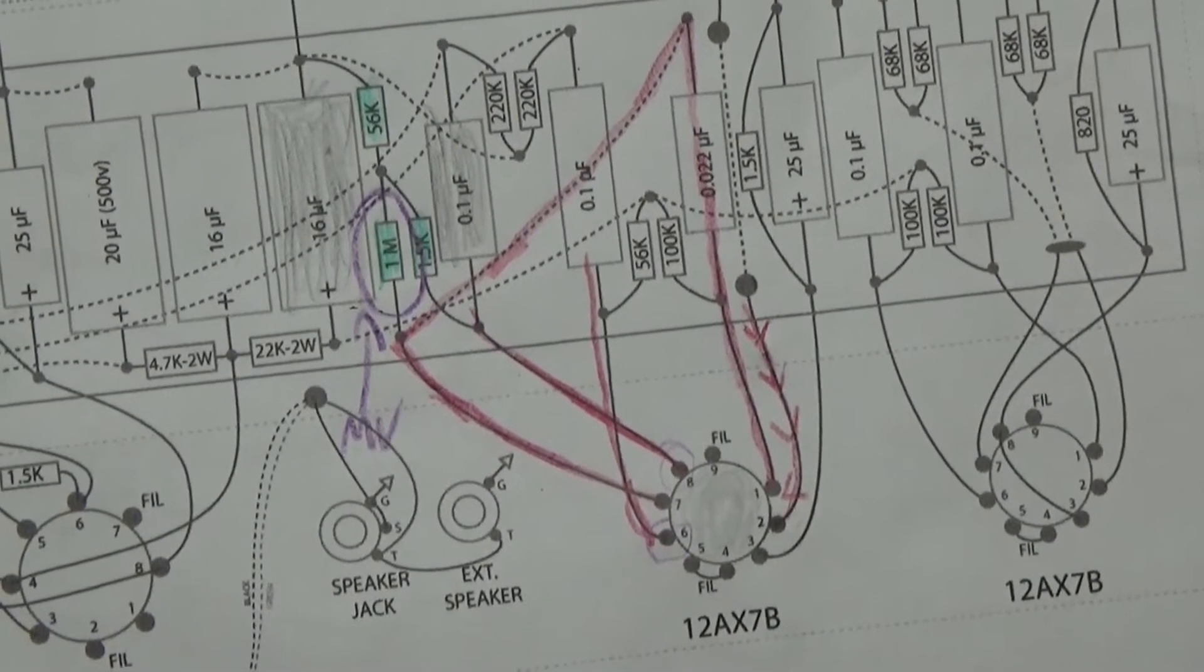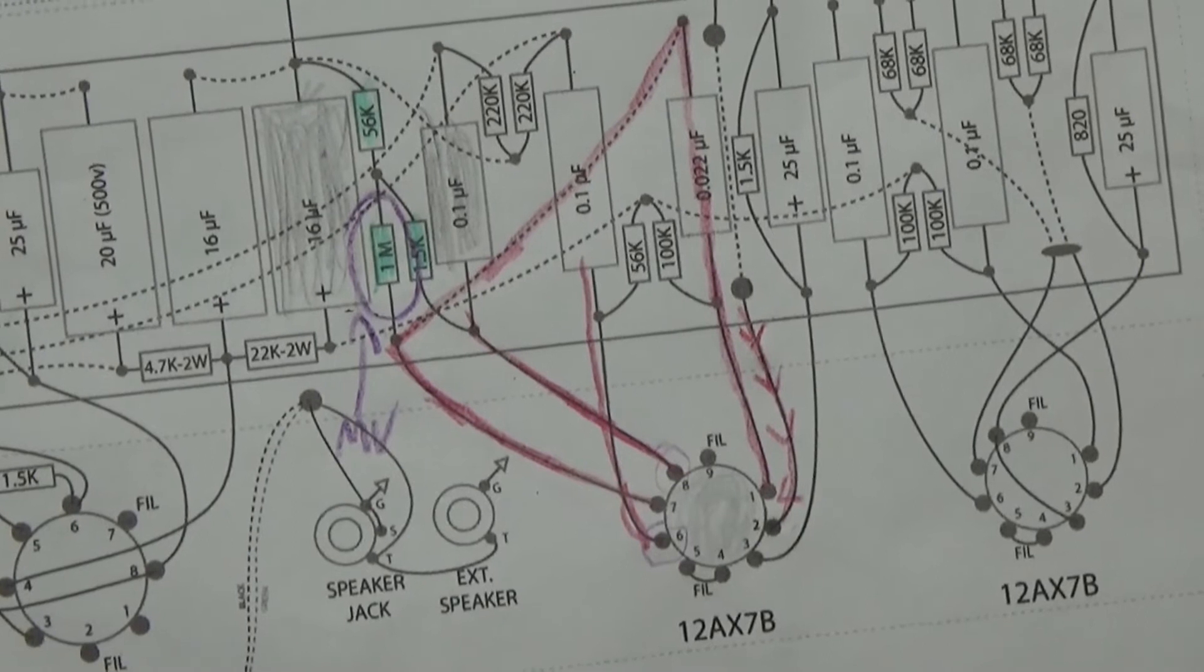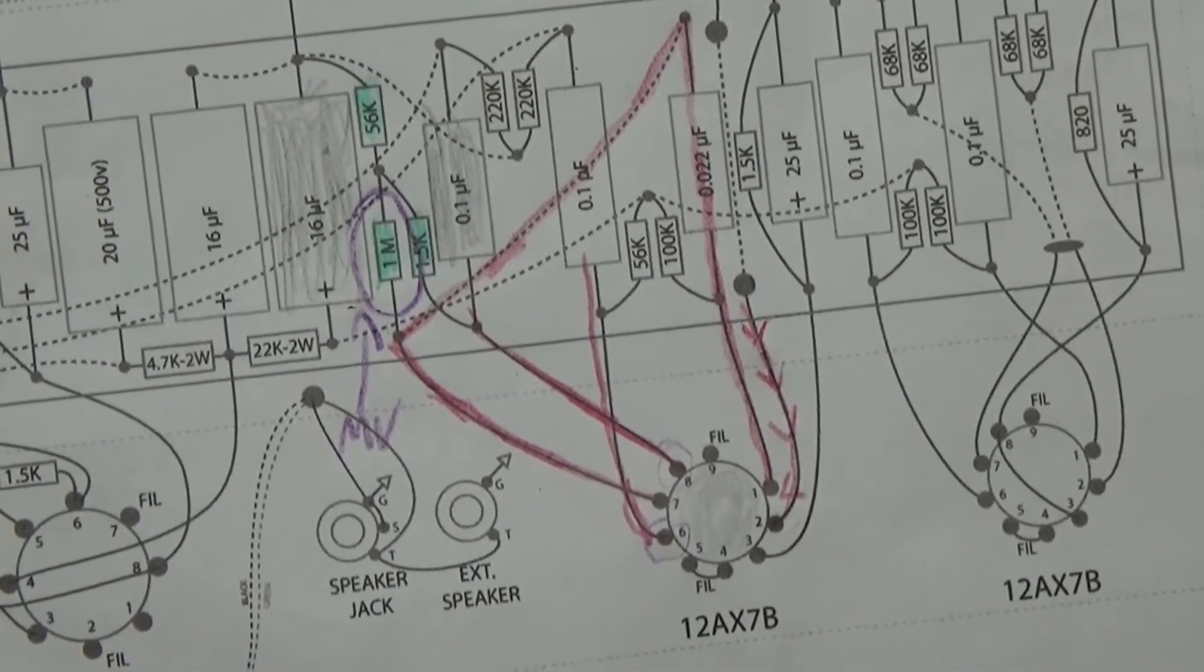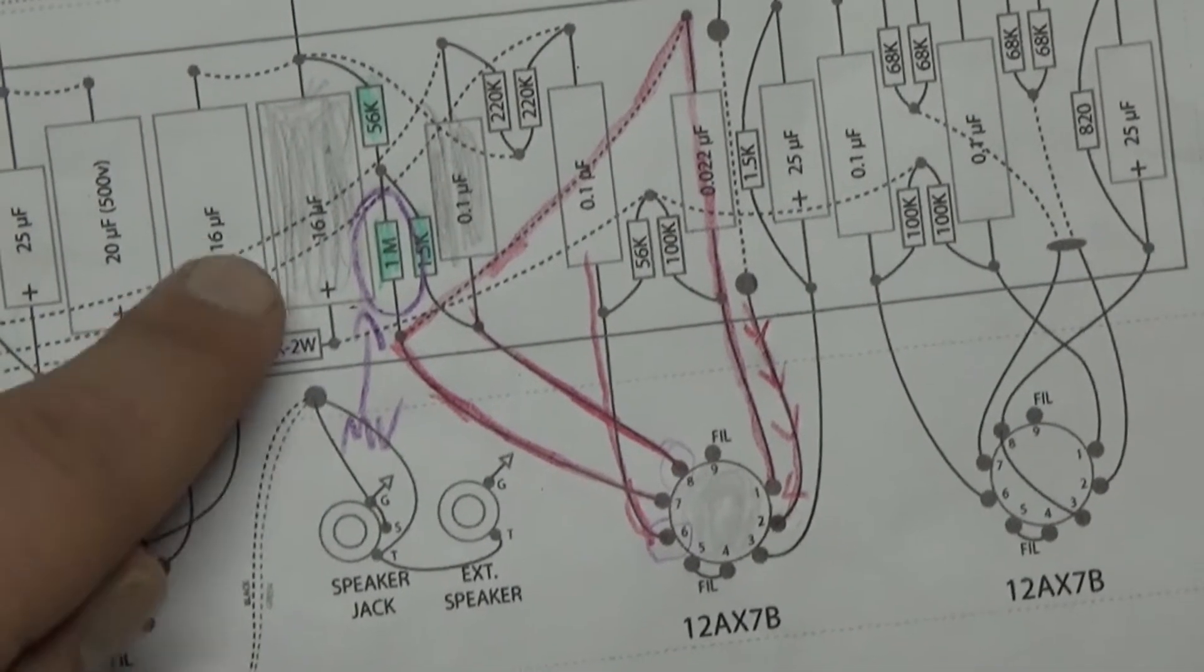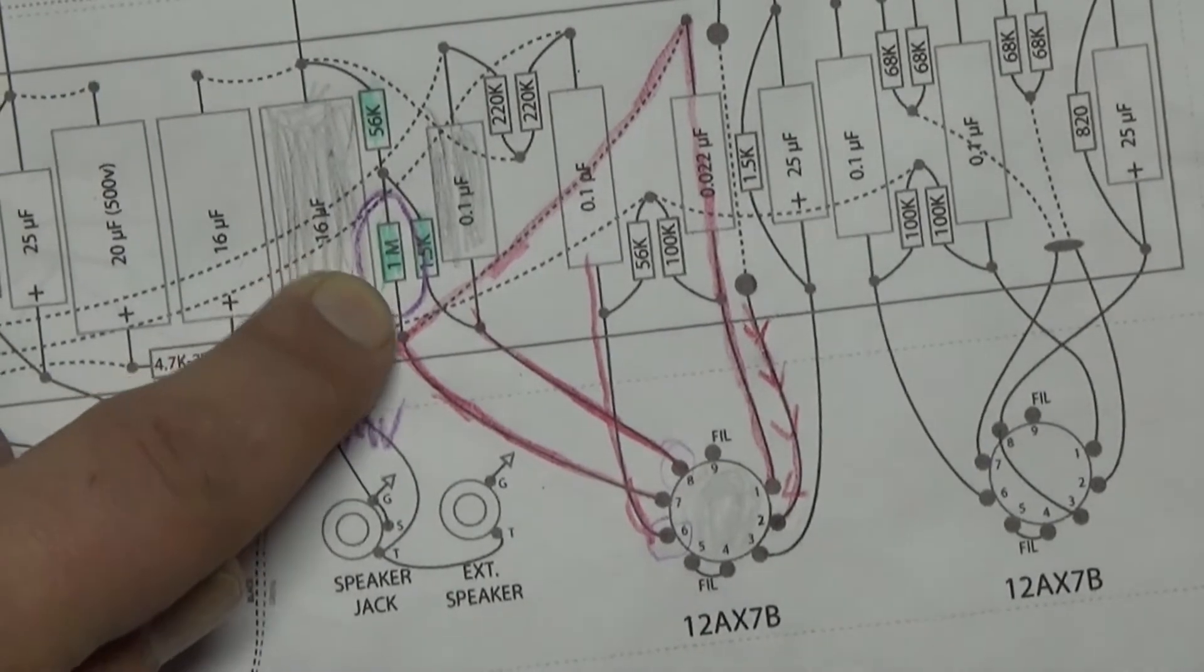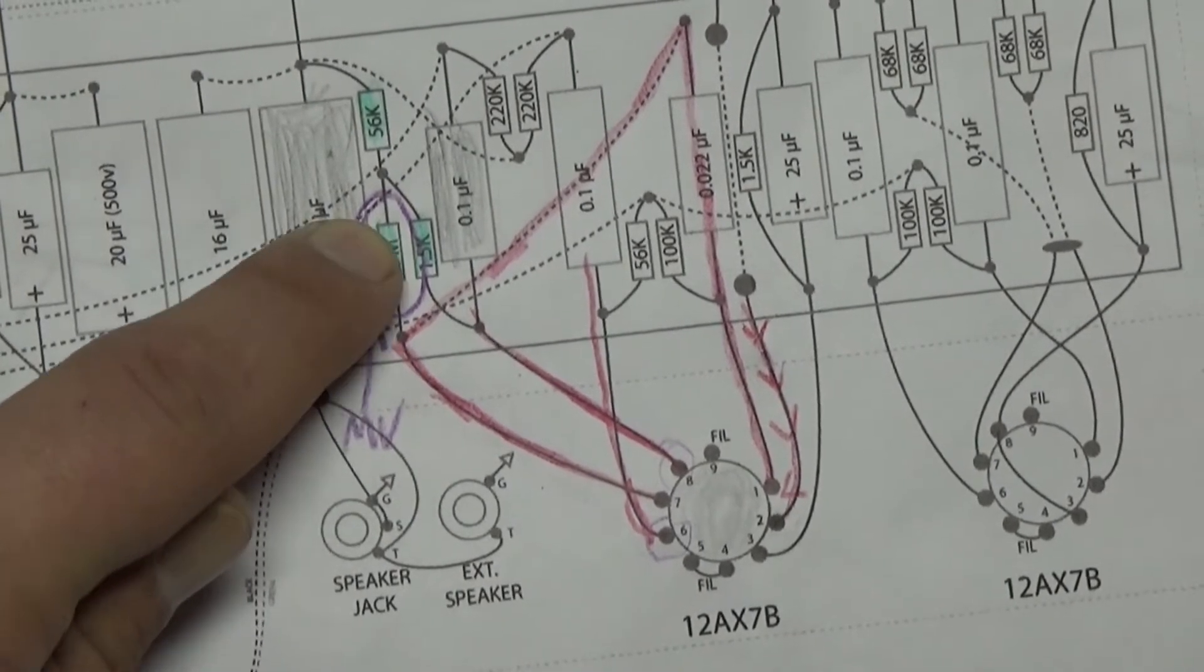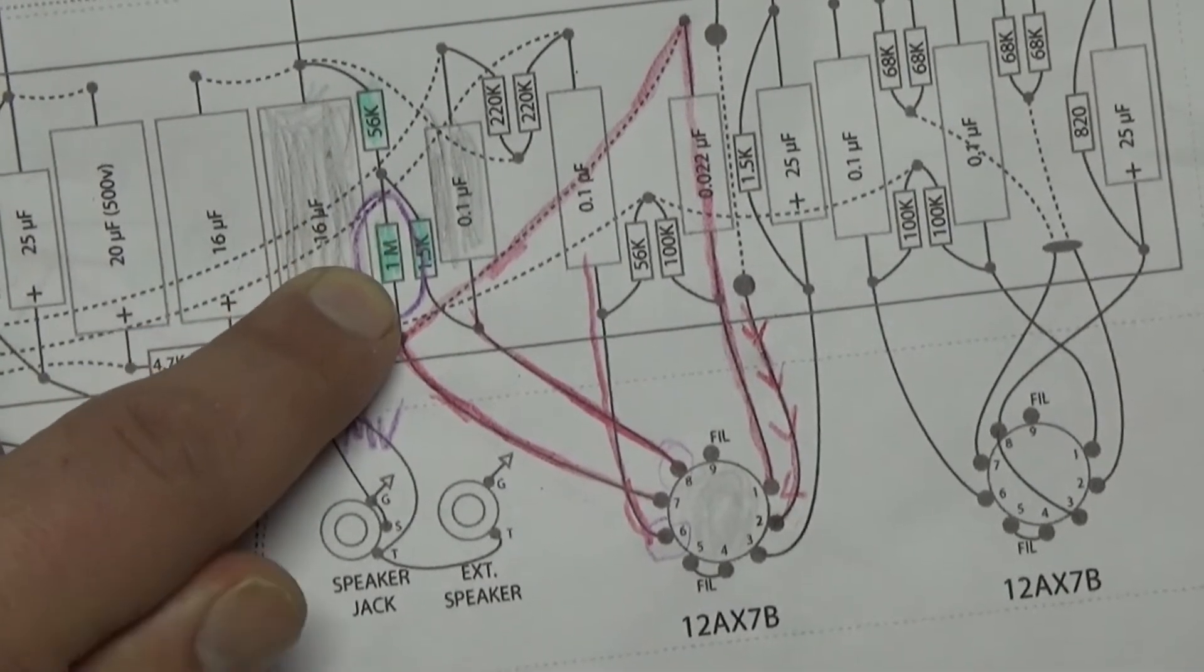All right, so let's talk a little bit about how this master volume is going to work. We're going to do what's called a pre-phase inverter master volume, and basically all that we're going to do is replace this one meg resistor here, grid leak resistor, with a one meg audio pot.